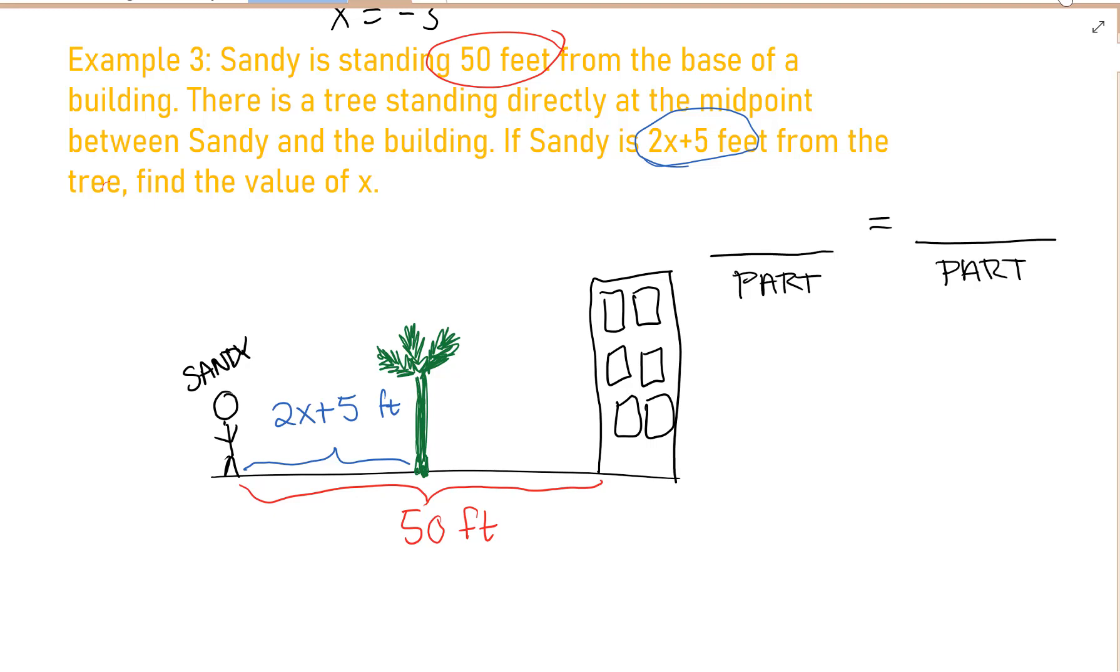To set up our equation for midpoint, part equals part. So 2X plus 5 feet should equal this distance. But do I know that distance? Some of you say, well, if the yellow is equal to the blue, then I know that the blue distance is 2X plus 5 as well. But if we make 2X plus 5 equal to 2X plus 5, that's not going to help us solve for X because it will just end up getting 0 equals 0. So do we know this distance?